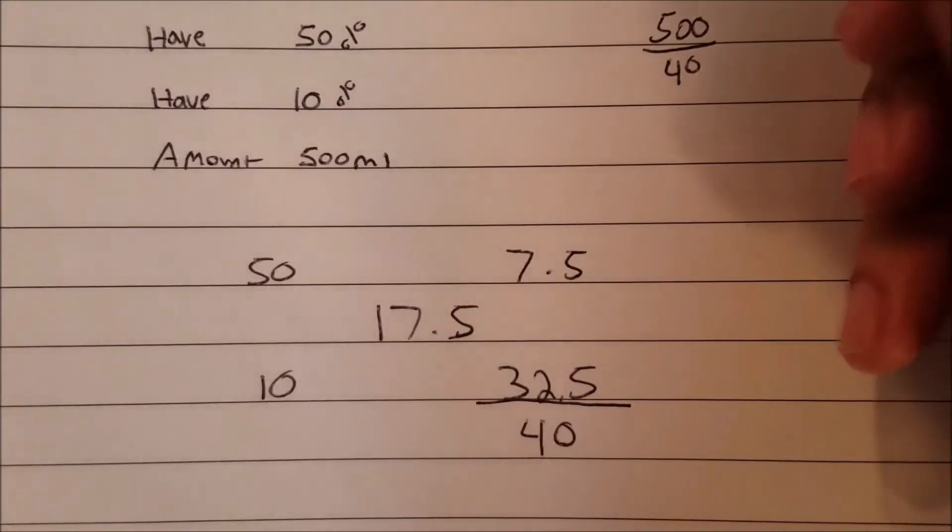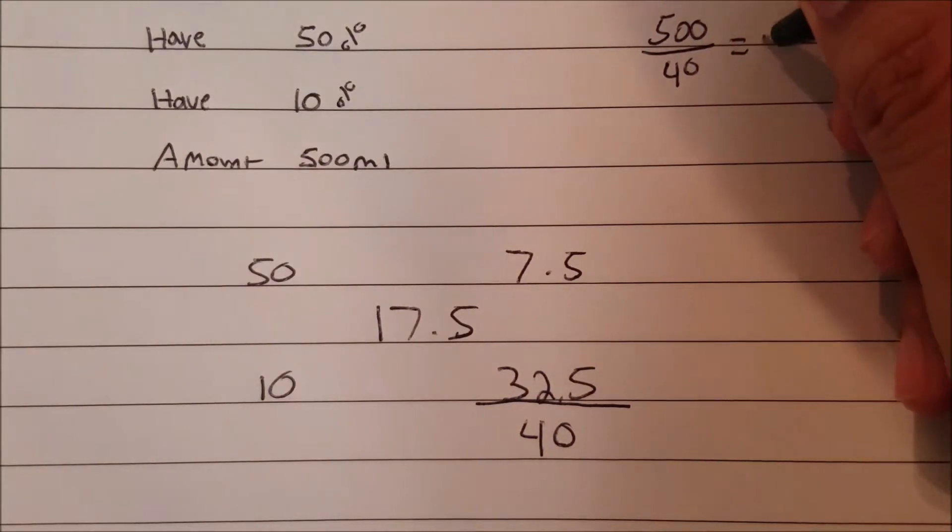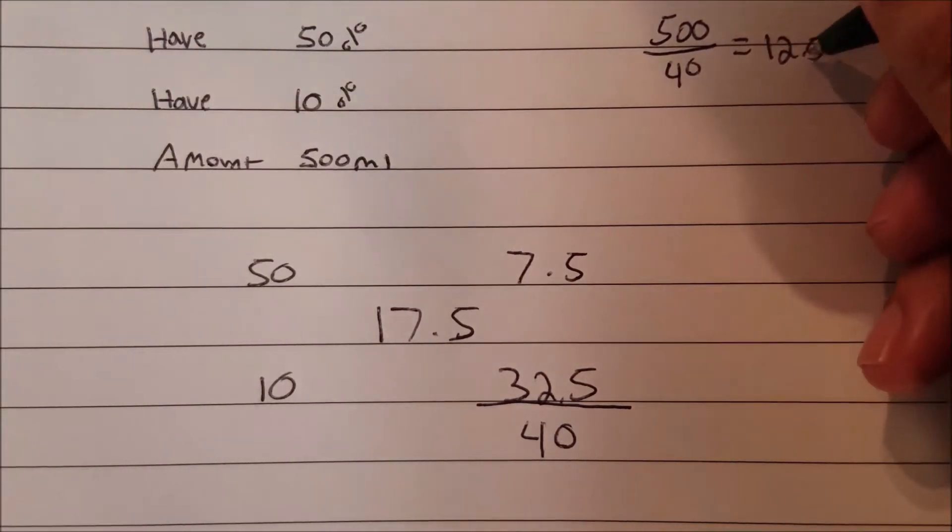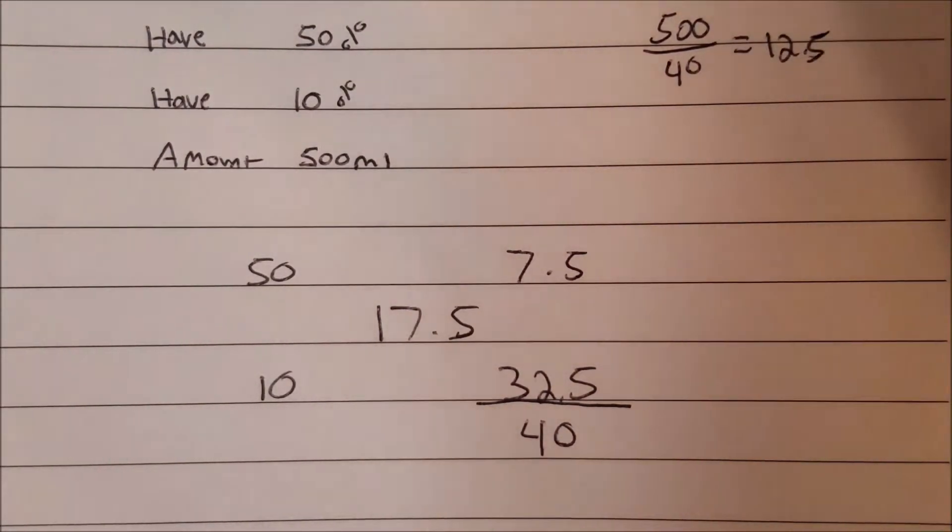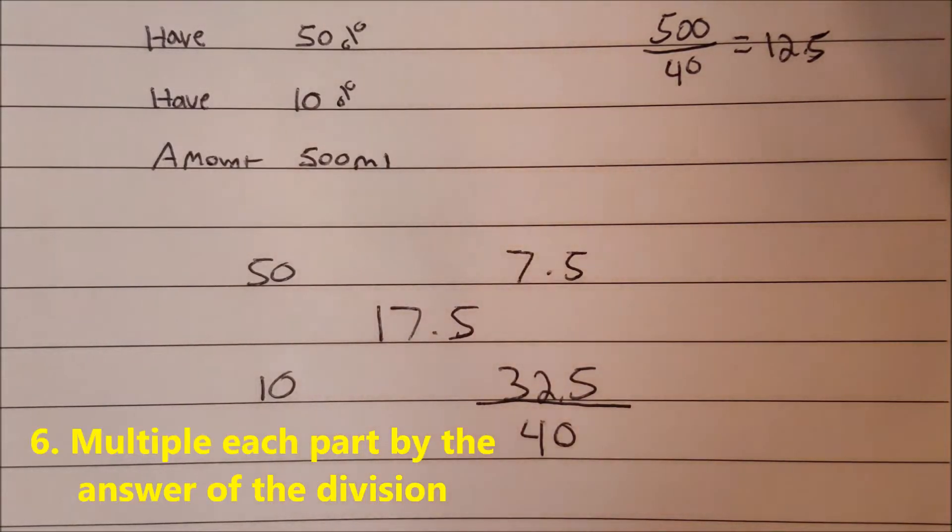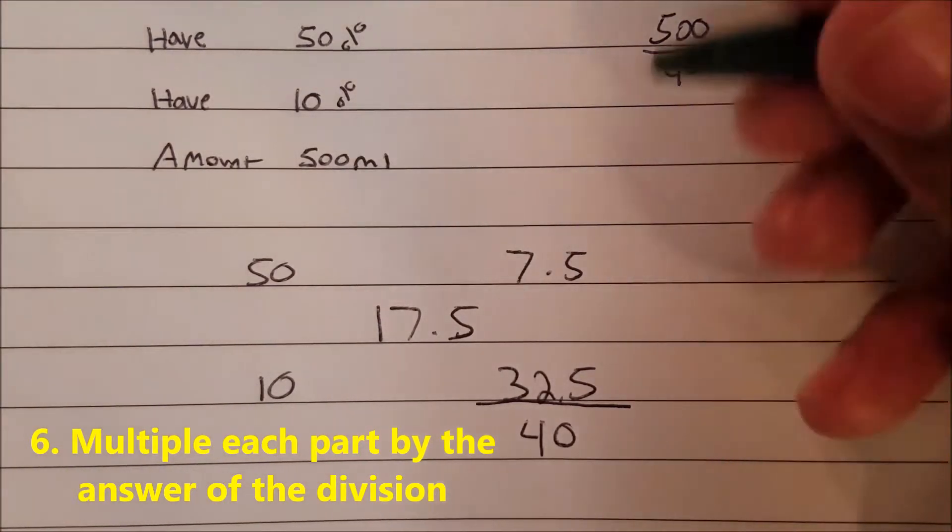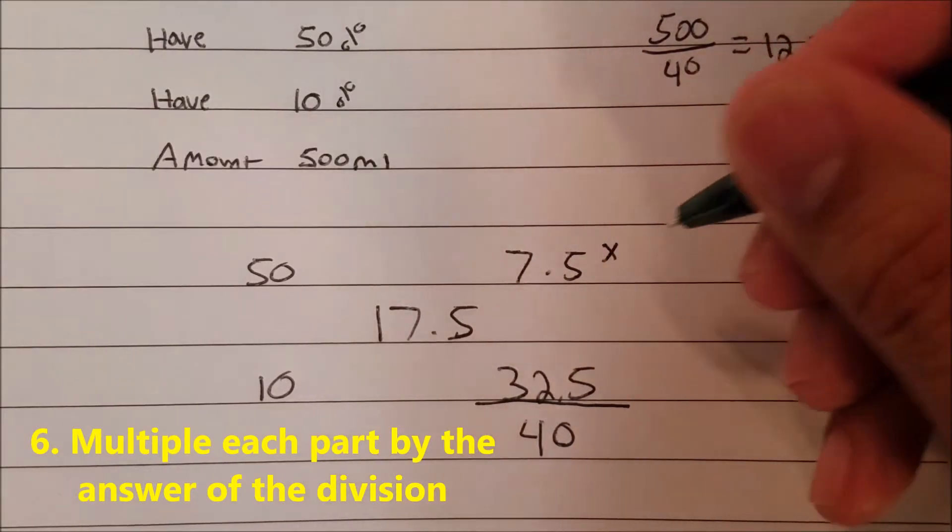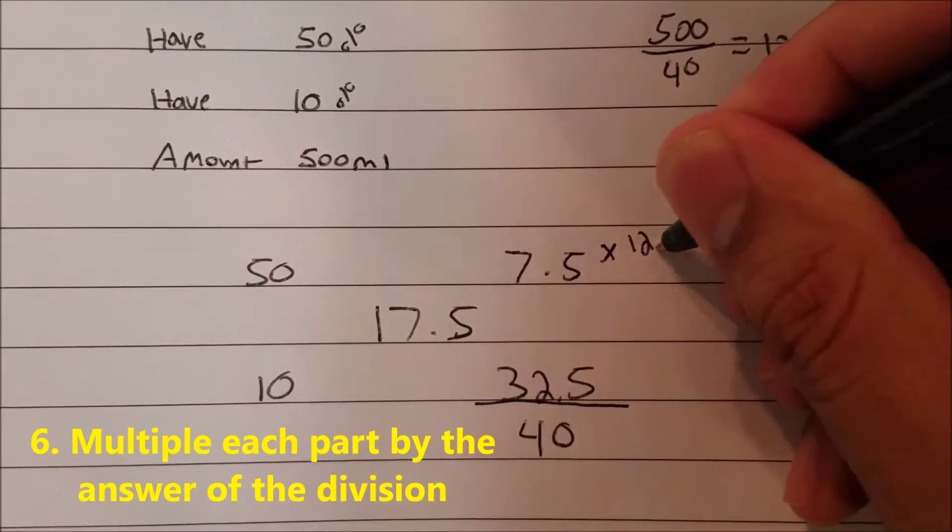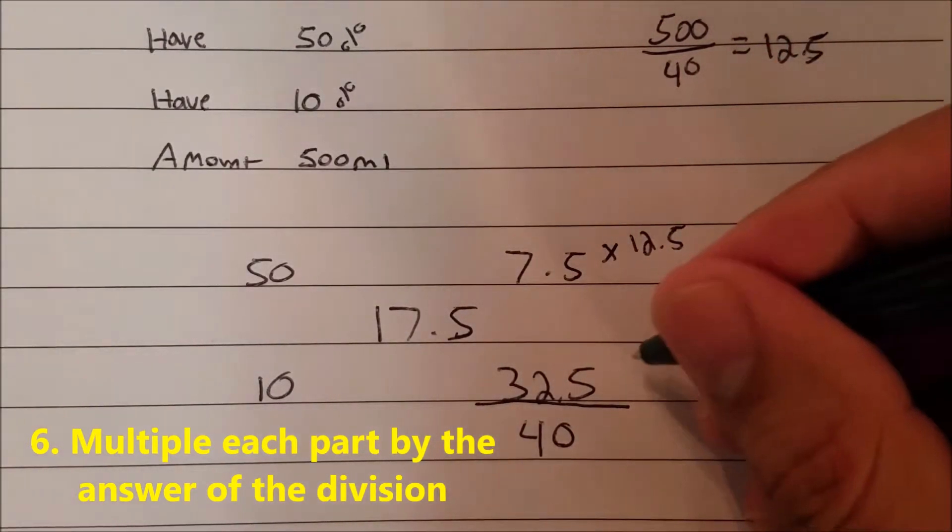The next step says multiply each part by the answer of the division. These are the parts right here: 7.5 and 32.5. So we've got to multiply that by 12.5.